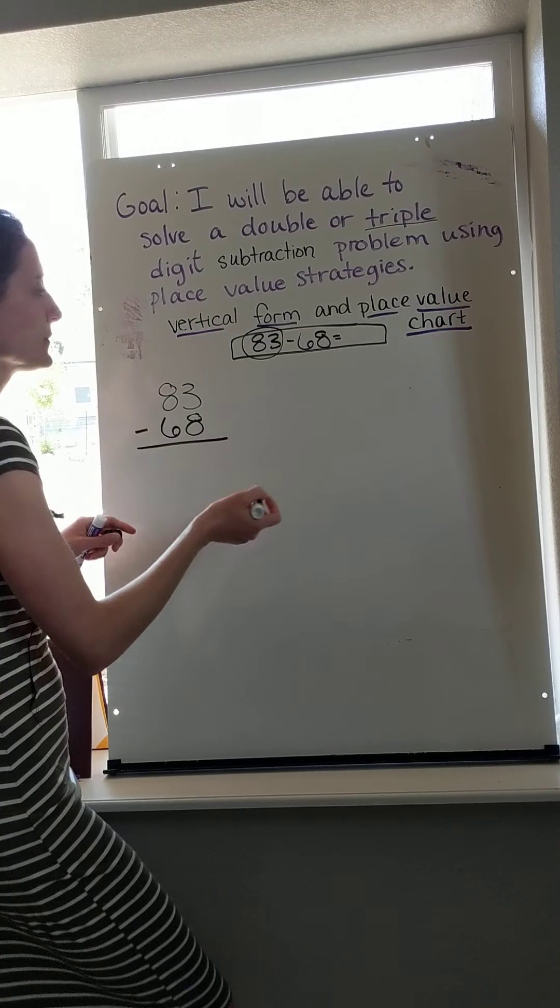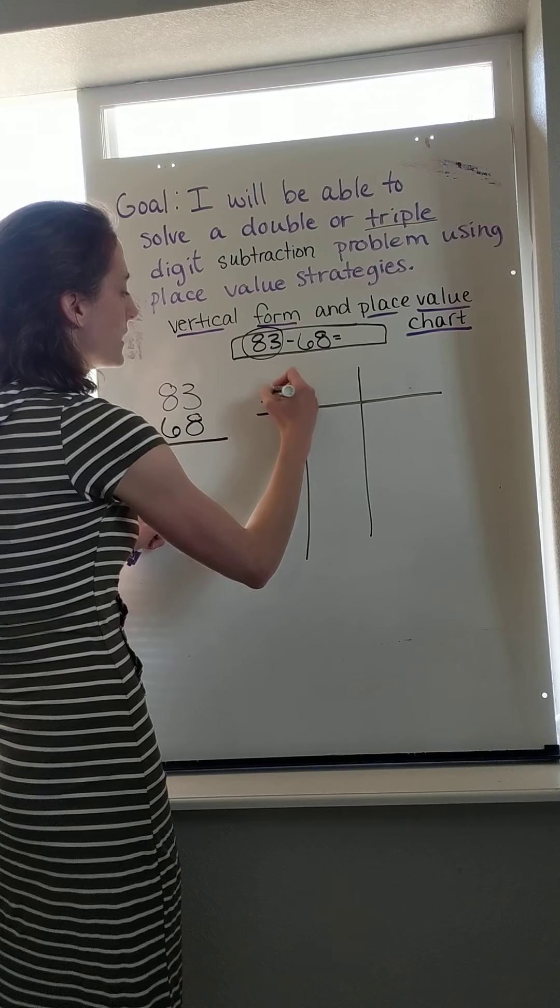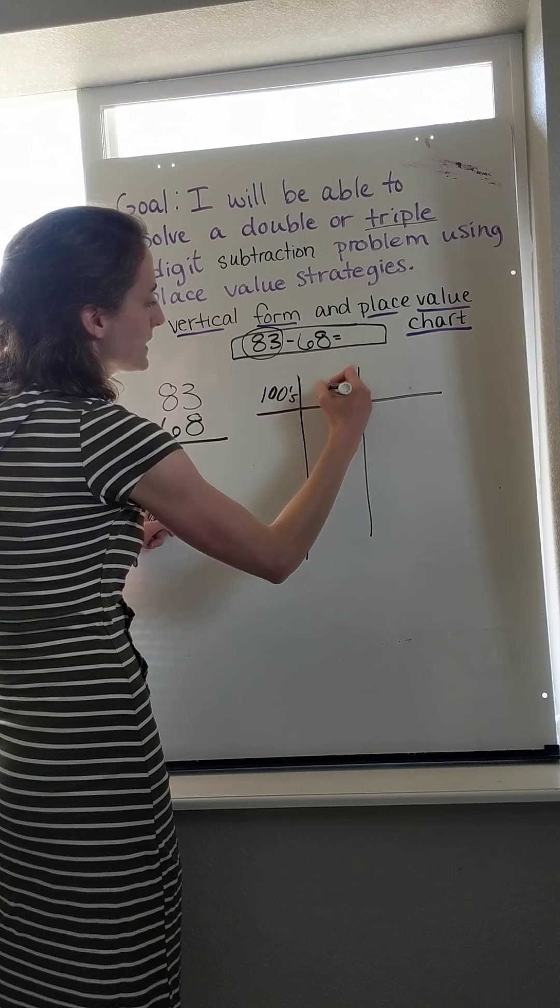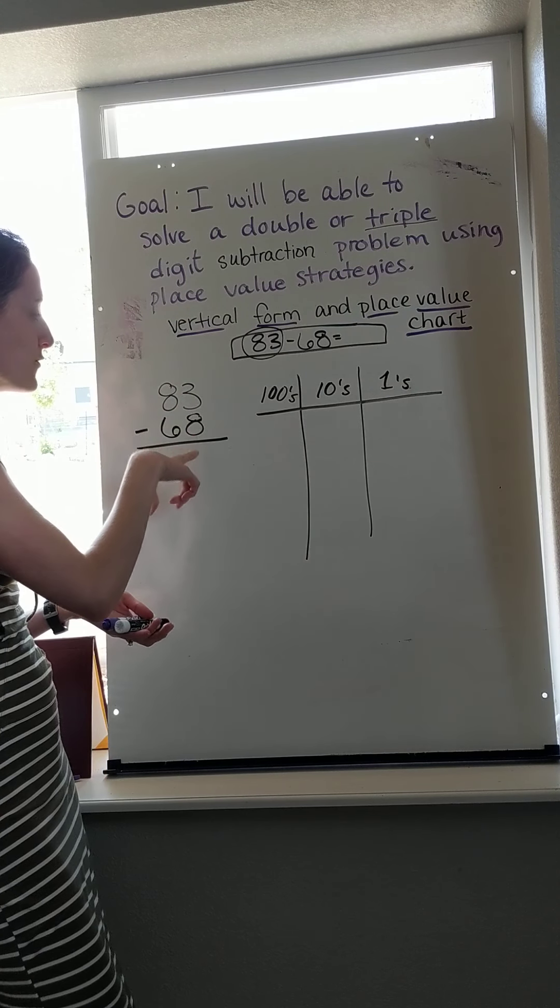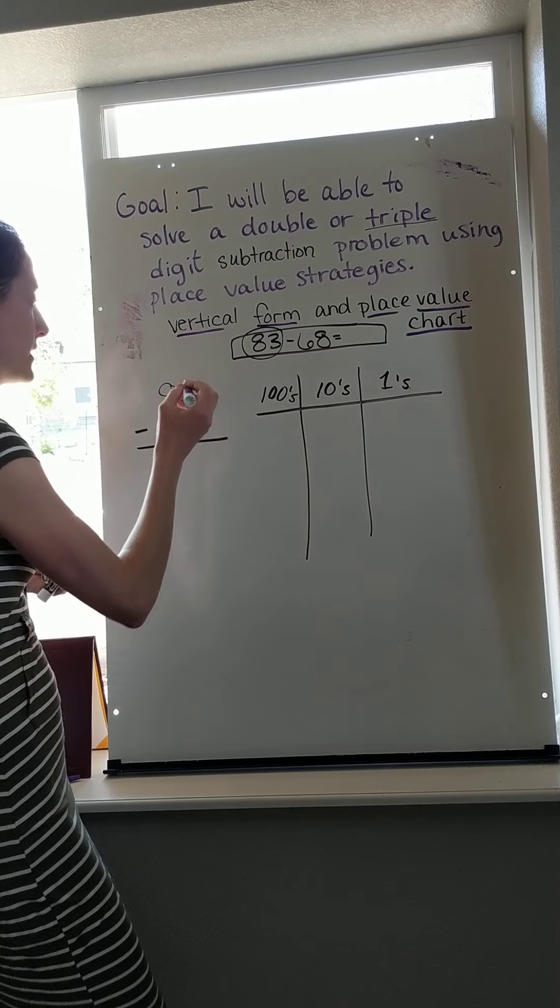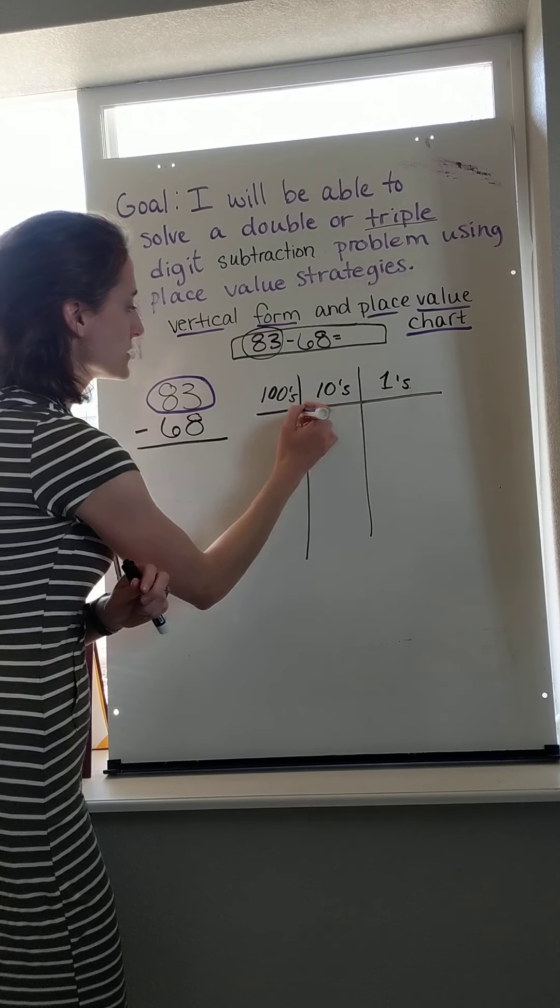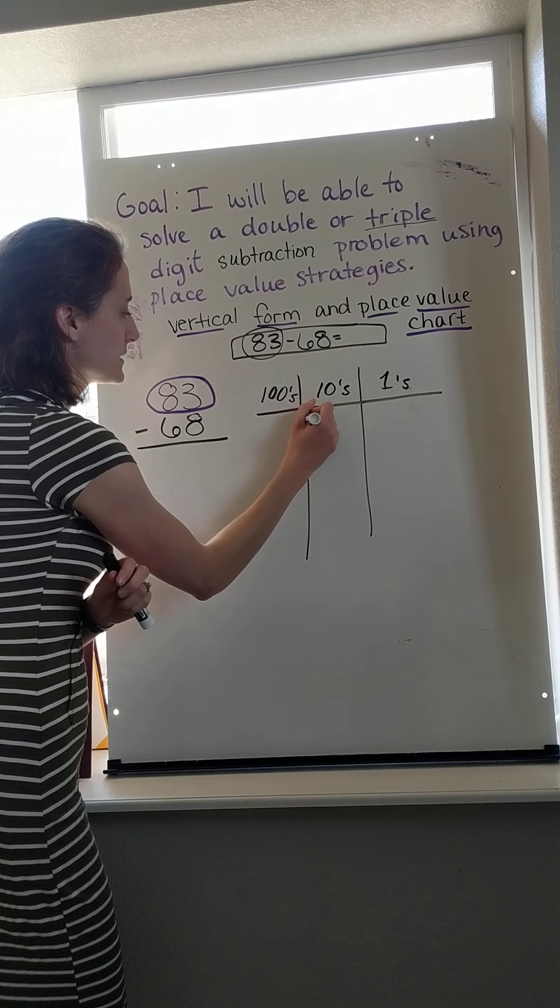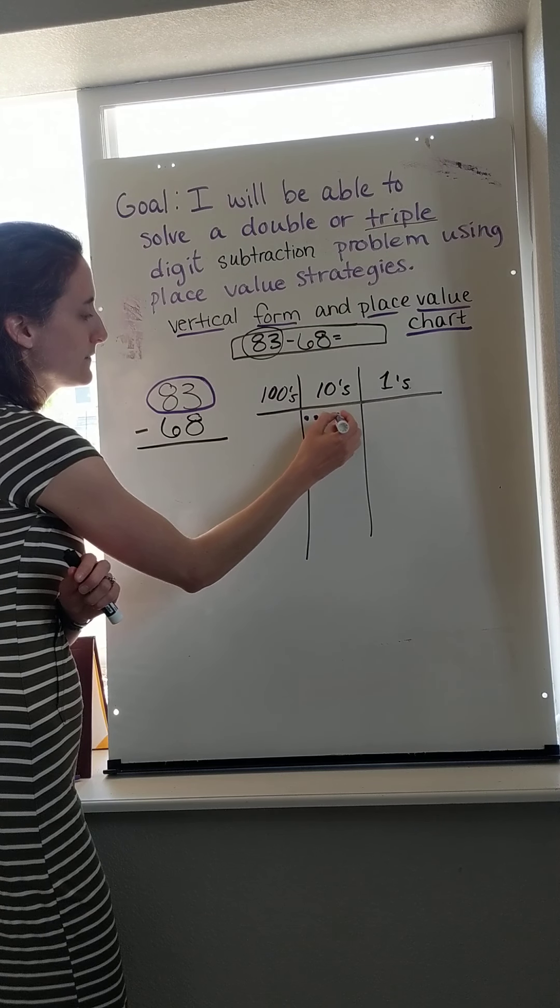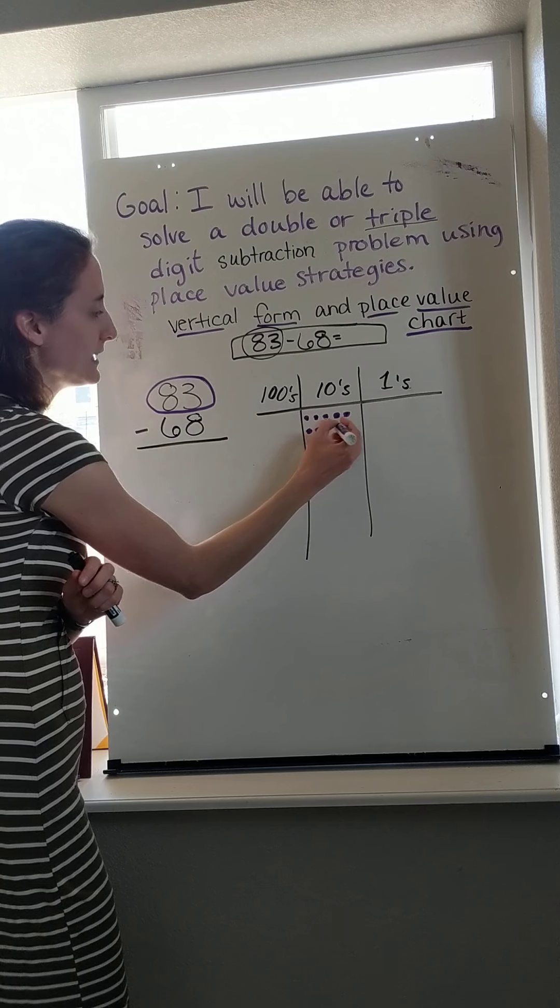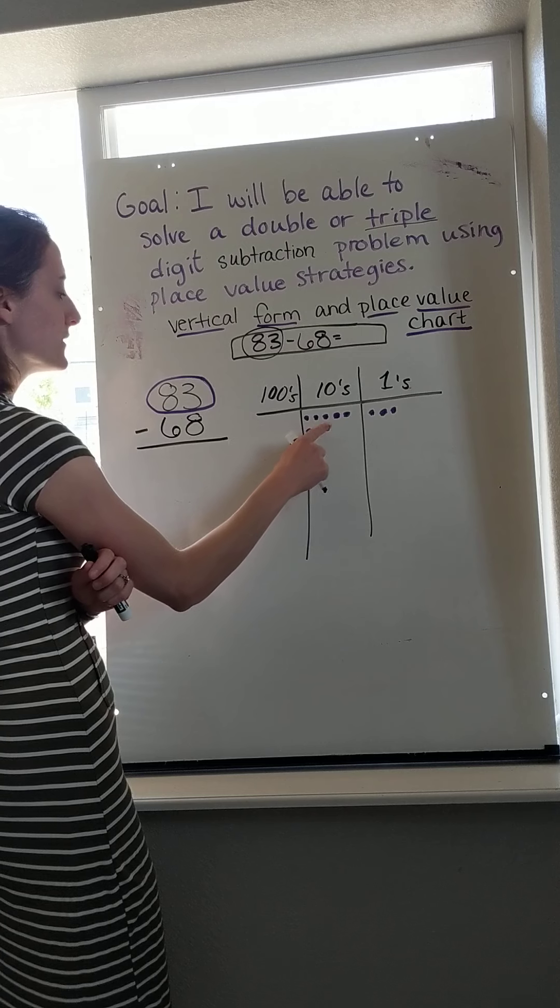I'm going to come over here and say, okay, I'm building my place value chart: my hundreds place, my tens place, and my ones place. Now I look over here and I say I have to build my whole into my chart and cross out the part that I need to take away. So let's see, 83: 10, 20, 30, 40, 50, 60, 70, 80, 81, 82, 83. Let's double check: 8 tens, 3 ones. I did it.